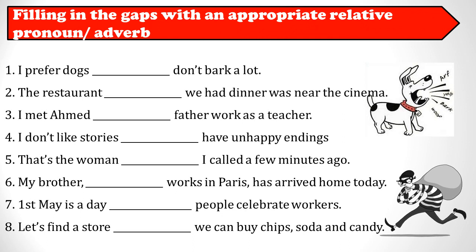To finish, let's do an exercise. Fill in the gaps with an appropriate relative pronoun or adverb. Number one: I prefer dogs which don't bark a lot. Number two: The restaurant where we had dinner was near the cinema. Number three: I met Ahmed whose father works as a teacher. Number four: I don't like stories which have unhappy endings. Number five: That's the woman whom I called a few minutes ago.